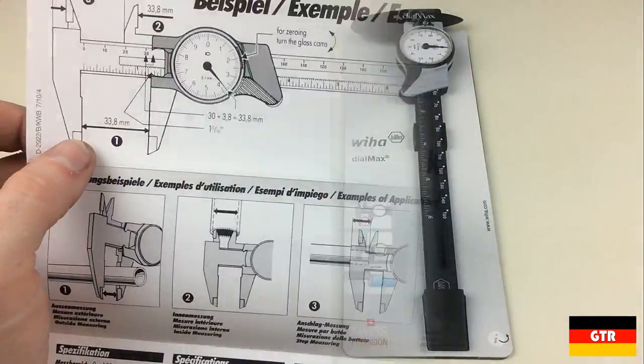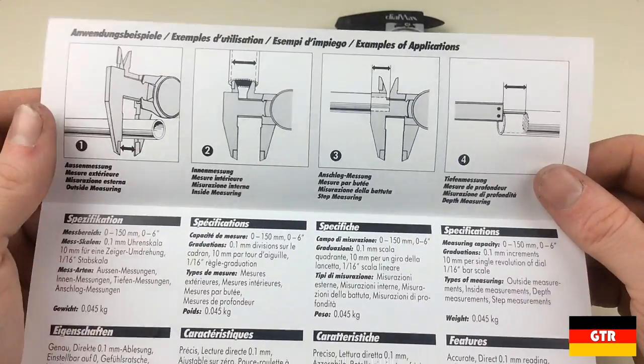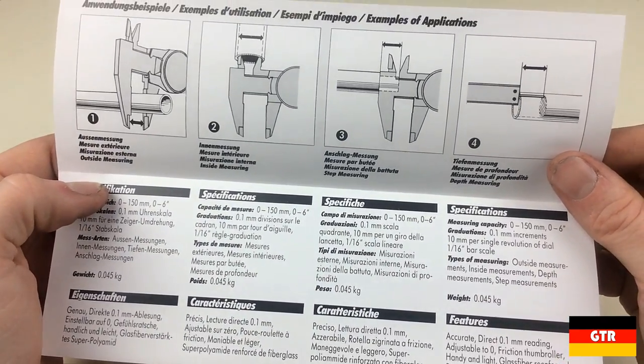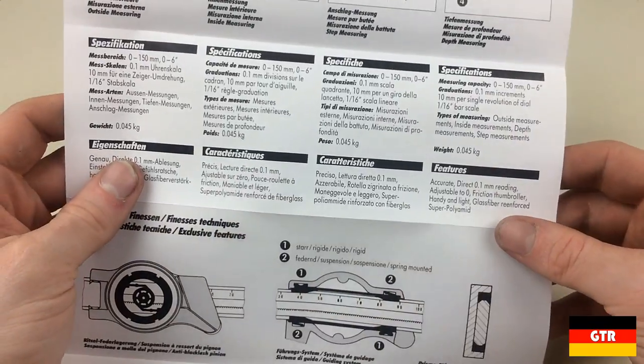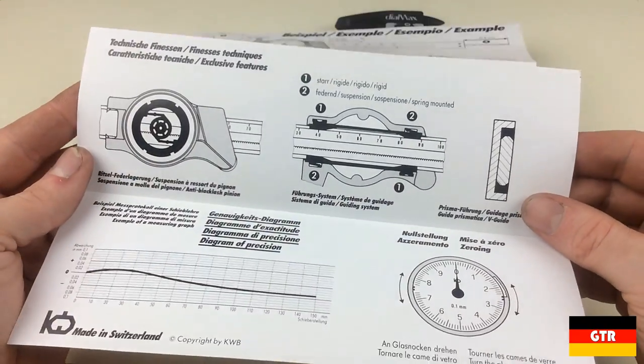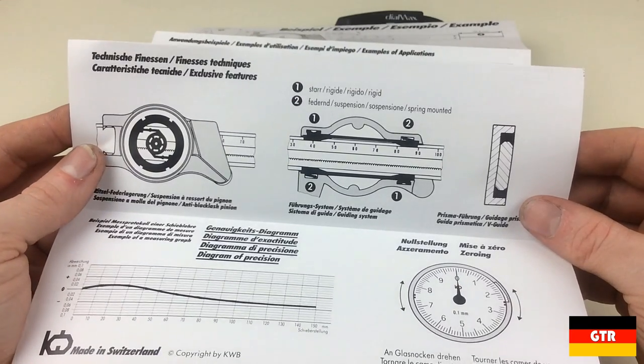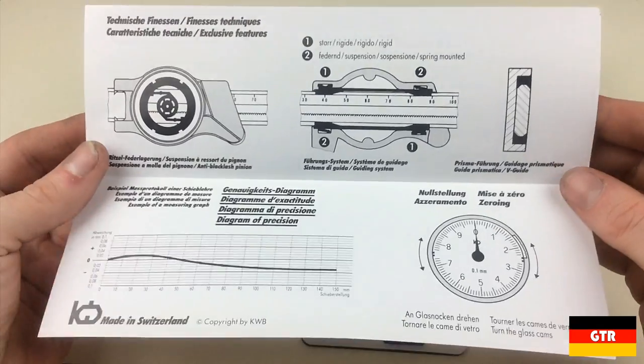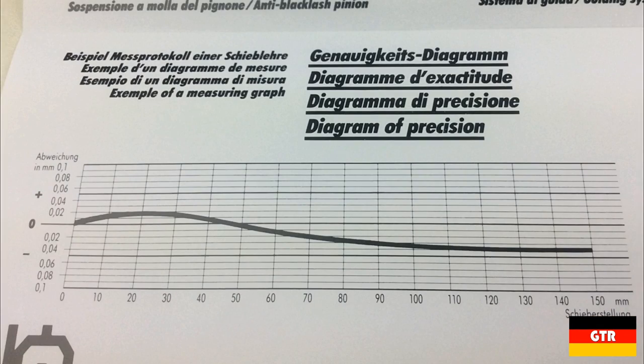First let's look at the included documentation. The document details the four types of measurements you can make with these calipers, which are inside, outside, step, and depth. Next there is a mention of a couple of exclusive features in these calipers. This includes an anti-backlash pinion and a V-guide system with opposing rigid and spring joints. At the bottom of the document there is a typical calibration curve across the entire range of the unit.